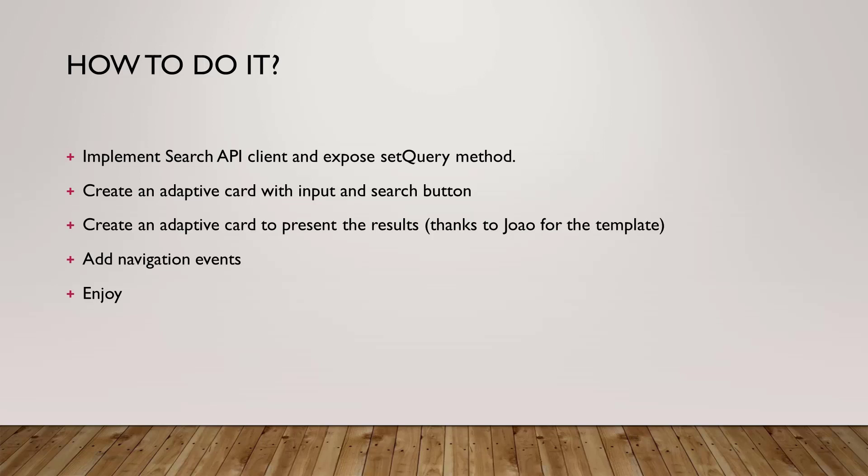So how do we do this? We need a search API client, and the key is that this client needs something like a `setQuery` method. You can use both the SharePoint Search API and the Graph Search API. I tend to use the Graph Search API only because it has a much nicer response model — you don't have to go through a key-value list to extract objects from the search results. SharePoint API will be a little bit faster but will have a bigger response, so either is absolutely fine.